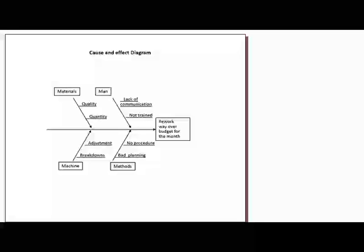What you do is brainstorm the possible causes of the problem — ask what are the possible contributors to causing the rework going over budget. There are two golden rules for brainstorming: the first golden rule is there are no bad ideas, and the second golden rule is there are no bad ideas. You list causes on the template or on post-it notes posted to the board, and don't get too hung up on which category a cause belongs to.